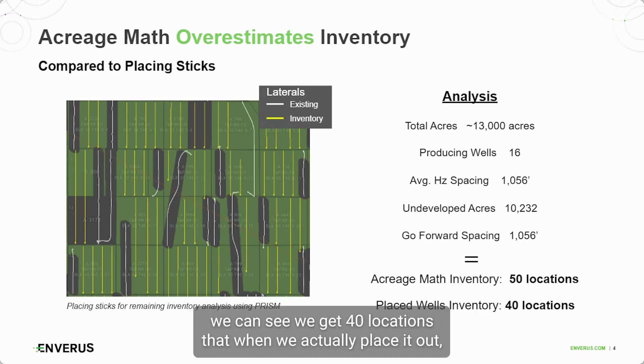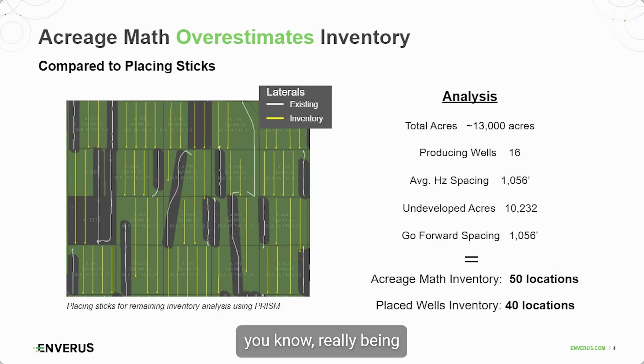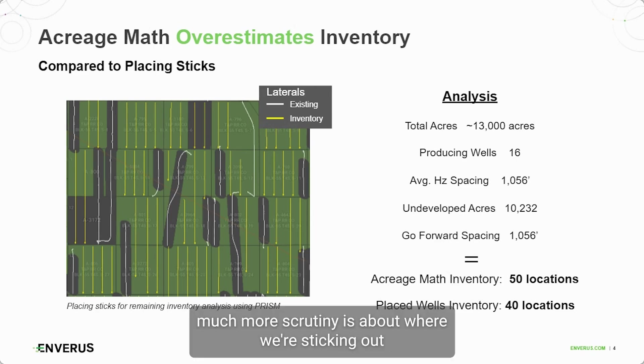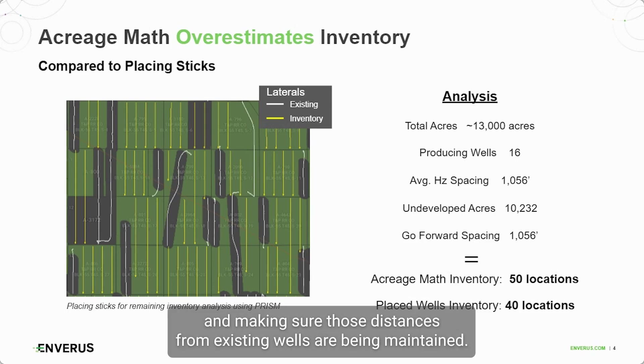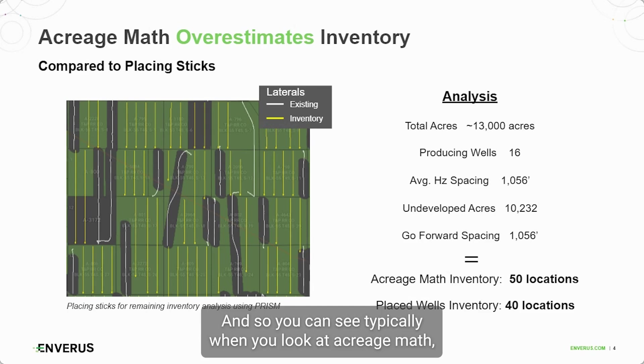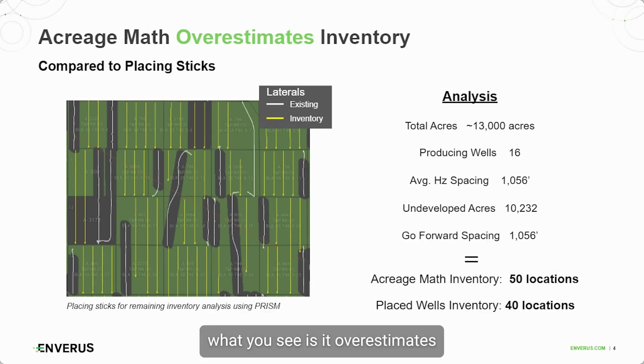When we do the actual count of those yellow sticks, we get 40 locations. By actually placing them out and being much more scrutinous about where we're sticking them — making sure distances from existing wells are maintained — you can see that acreage math typically overestimates inventory for a particular acreage position.